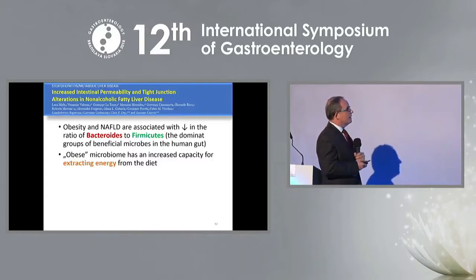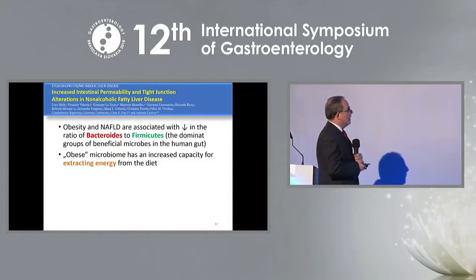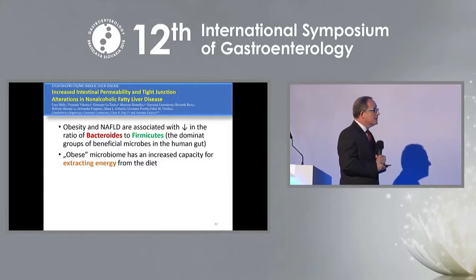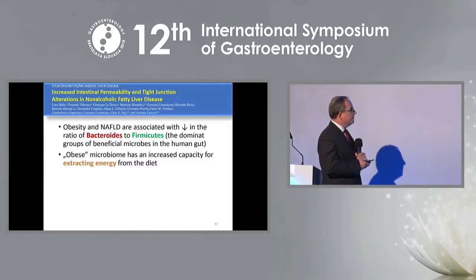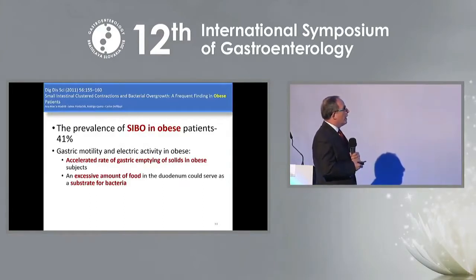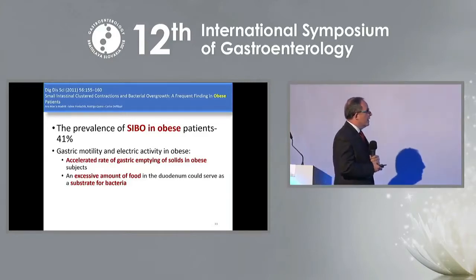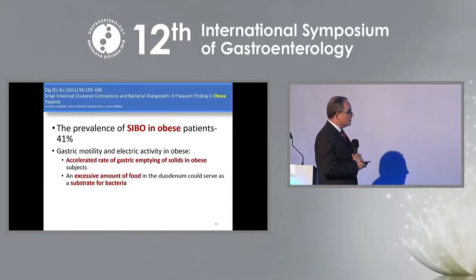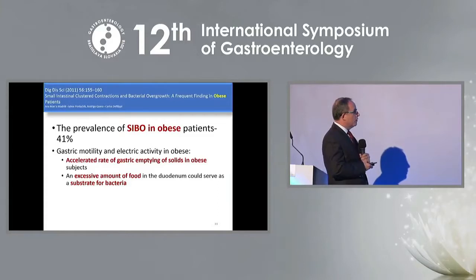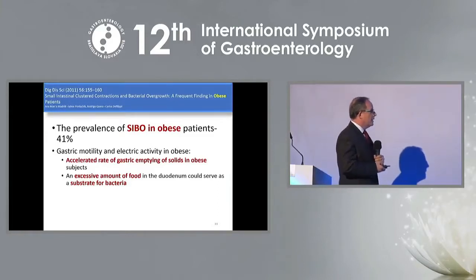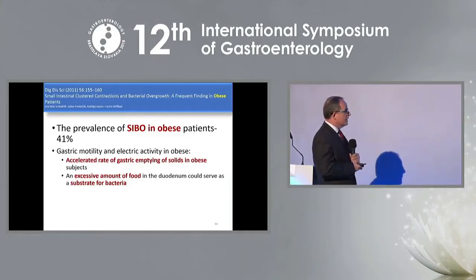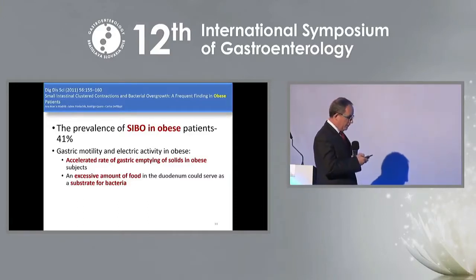It was shown that the prevalence of SIBO in obese patients is about 40%. Gastric motility is changed in this situation — accelerated rate of gastric emptying of solids in obese subjects means that excessive amounts of food in the duodenum could serve as a substrate for bacteria, and this is probably one of the causes of obesity.